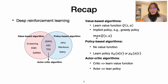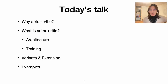In this talk, I'm going to introduce another one called actor-critic algorithm. It is a hybrid algorithm which includes value-based and policy-based approaches. I will firstly introduce why actor-critic is needed. Next, I will introduce what actor-critic is, from architecture and training. Then we'll cover variants and extensions from the basic actor-critic algorithm.